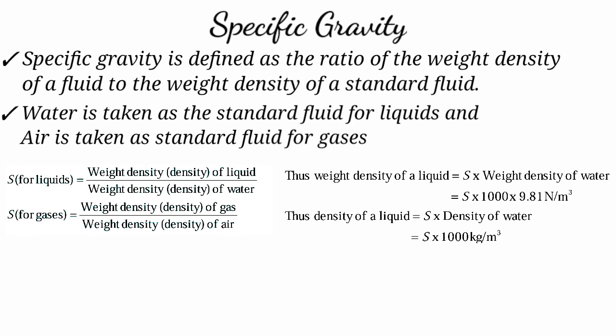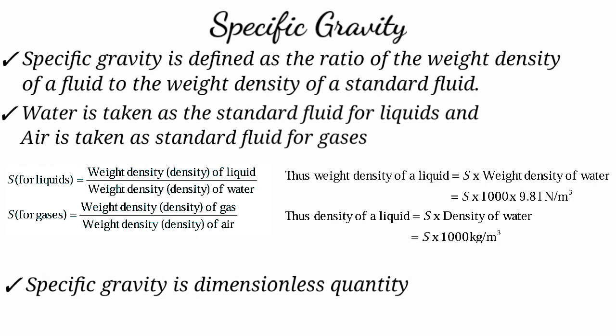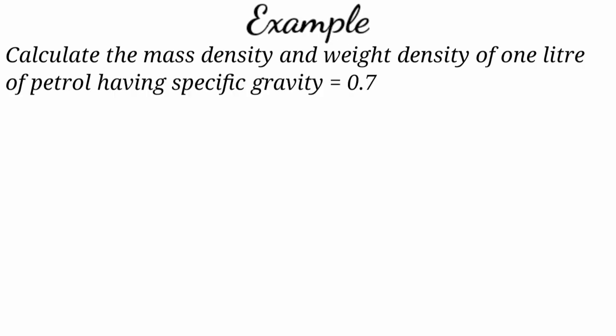Specific gravity is a unitless quantity because it is the ratio of the same type of quantities — weight density divided by weight density. So the units cancel out and specific gravity has no units.